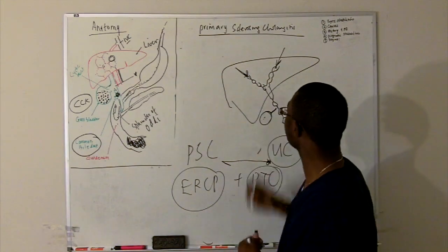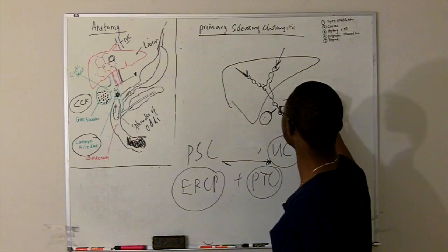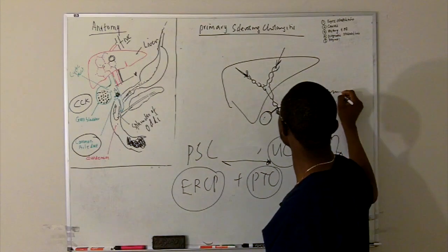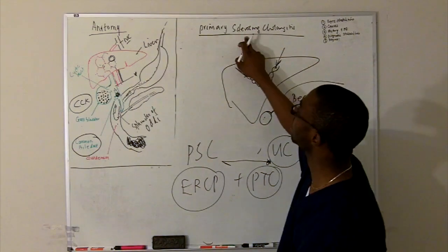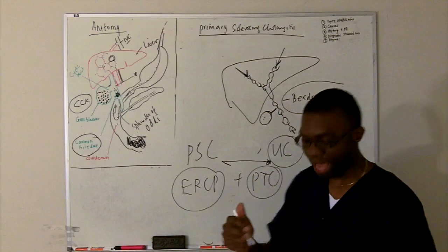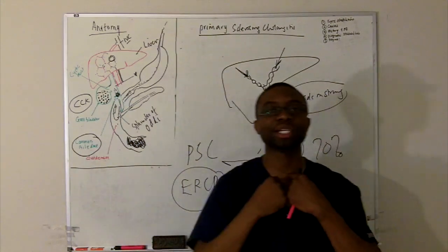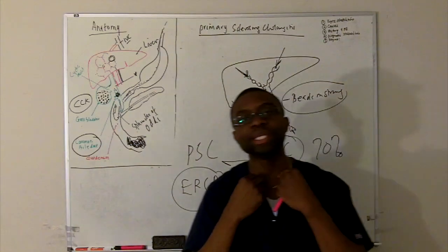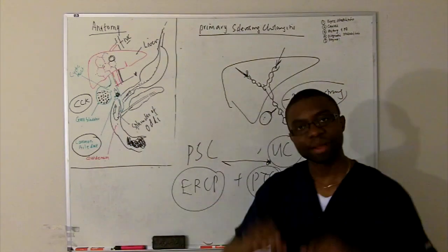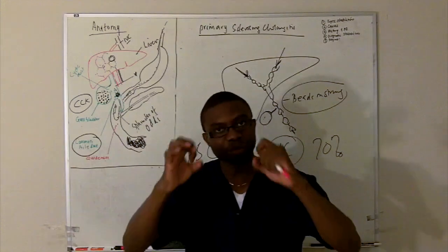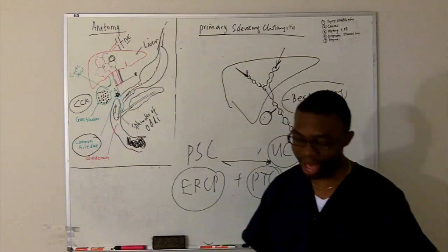We call it beads on a string. That's exactly what it is because it's sclerosing cholangitis. All this, the common bile duct, it's strictures. But all these beads got beads on it, right? Because it's all these little strictures being formed and forming little pockets. It's really bad.